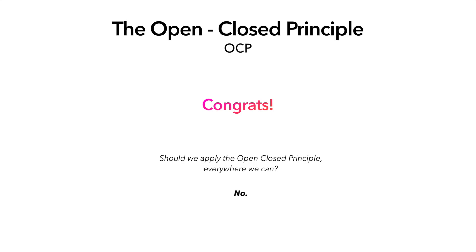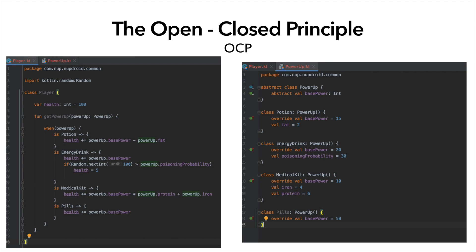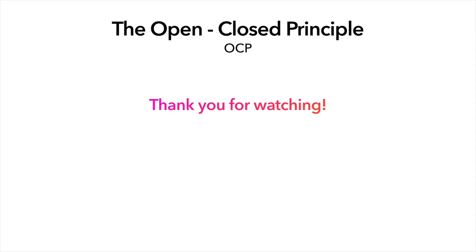The answer is no. Abstractions come at a cost. Just like the single responsibility principle from the previous video, we should apply our abstractions at strategically the best places — the places where we expect change to happen. In our Player class, we'd totally expect more power-ups in the future: start with three, end up with dozens. When we start applying OCP everywhere, we create unnecessary layers in our code, making it less readable and those layers will never be utilized. That's over-engineering, and it can bring more trouble down the road. Thank you very much for watching and I'll see you in the next video.